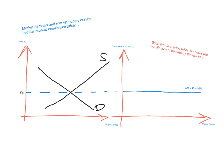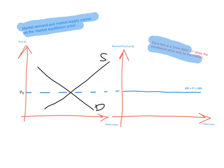The first thing we need to know about perfect competition is how price is set. Because the firms are so small and there's such a large number of firms, the equilibrium price is set by the market — market demand interacts with market supply to set the equilibrium price. Once that is set, each firm becomes a price taker.